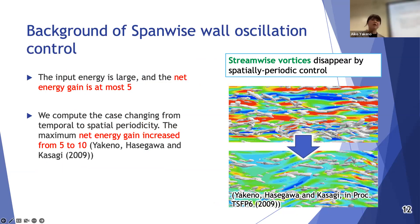The spanwise wall oscillation control achieves maximally 40 to 50 percent drag reduction. However, the input energy is very considerably large and the net energy gain is only five. Conventionally, maybe 10 years ago, we computed the case changing from temporal to spatial periodicity and we found the maximum energy gain increased from five to ten. Therefore I think the spatial periodicity has more potential than the temporal one.